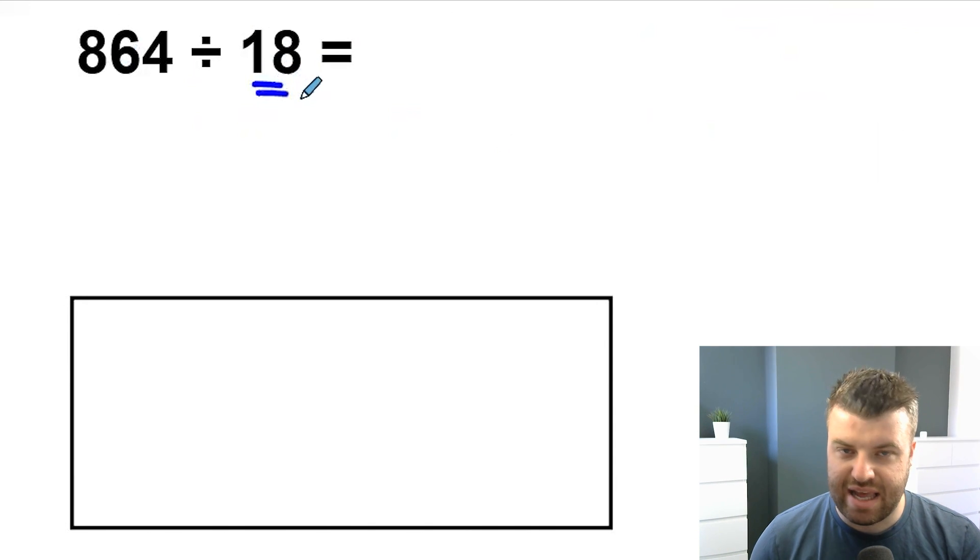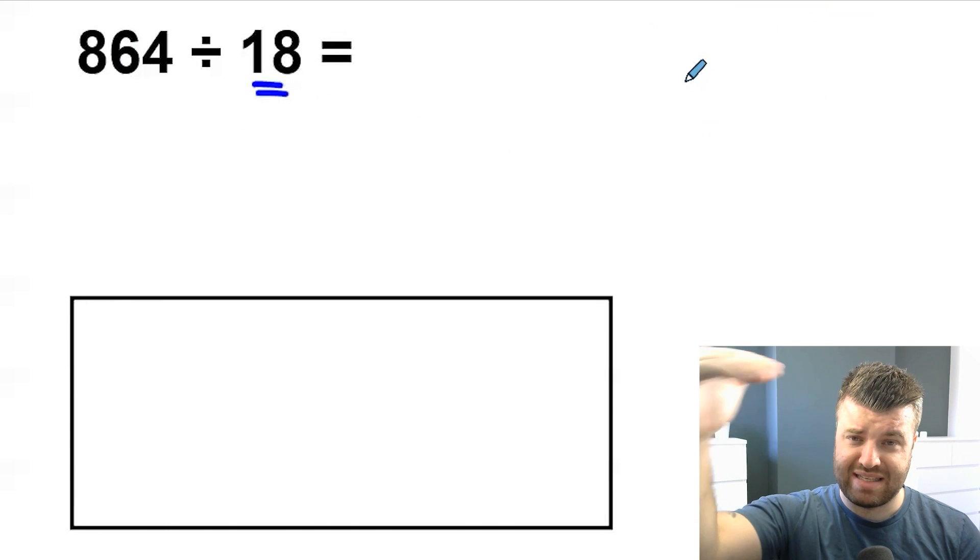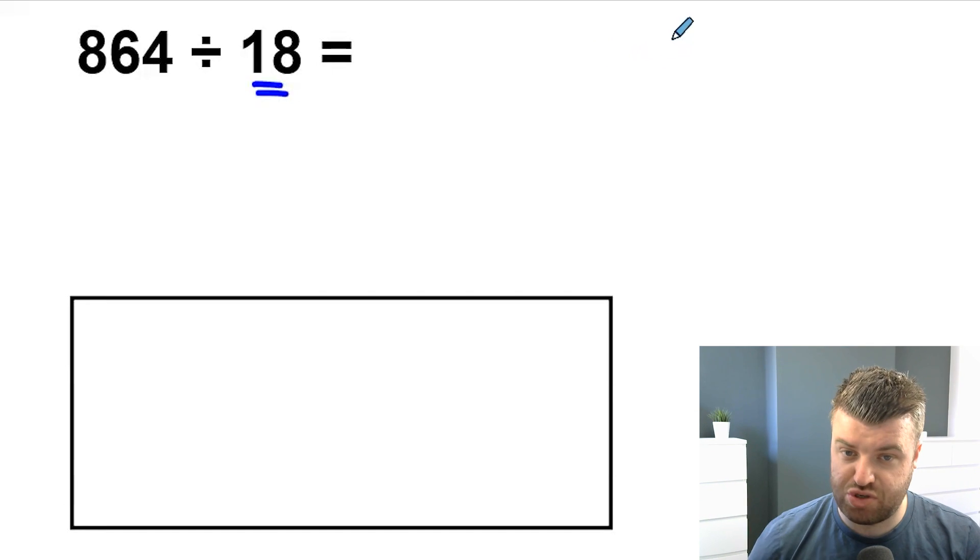So we're dividing by 18 here. 18 is quite tricky to divide by. We could do long division, we could write down our 18, the multiples of 18 down the side of our page. It's going to take us a while. Here's a shortcut.